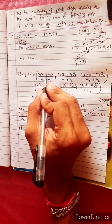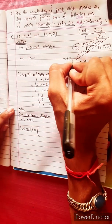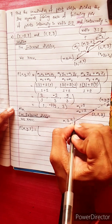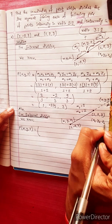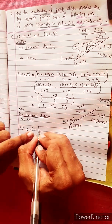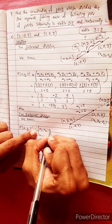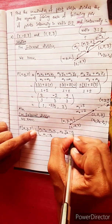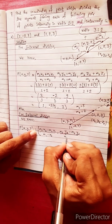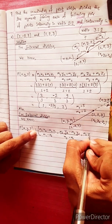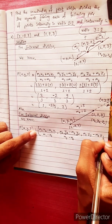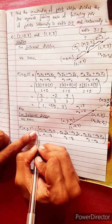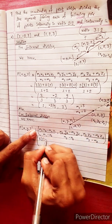Now applying the external division formula with x1, y1, z1 and x2, y2, z2. The formula is: x equals m1·x2 minus m2·x1, divided by m1 minus m2; y equals m1·y2 minus m2·y1, divided by m1 minus m2; z equals m1·z2 minus m2·z1, divided by m1 minus m2.